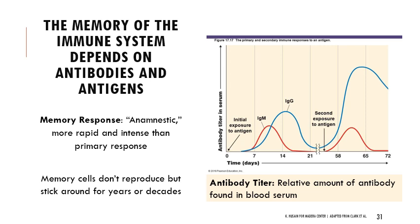When we get exposed to pathogens we start to learn from them, and a second exposure — the memory response — is very quick and intense because we already know what they are and how to fight them. While most white blood cells die off after days or weeks, memory cells can persist for years or even decades. They don't reproduce regularly — only when re-exposed to that antigen.